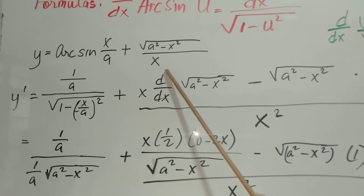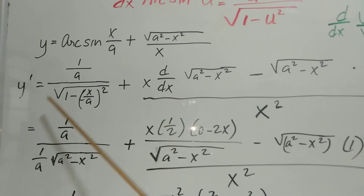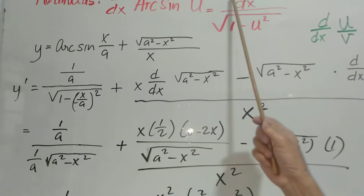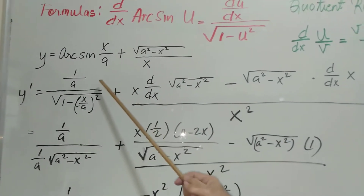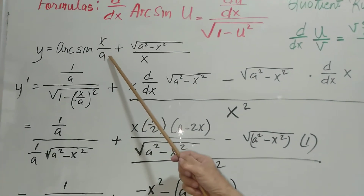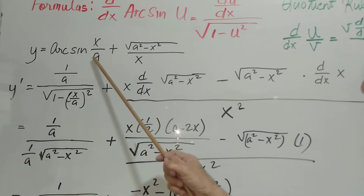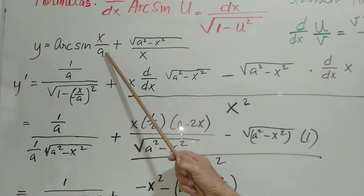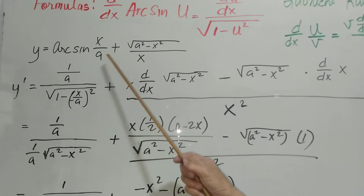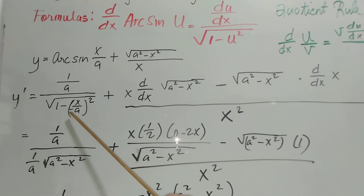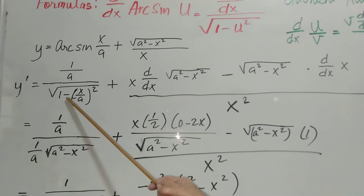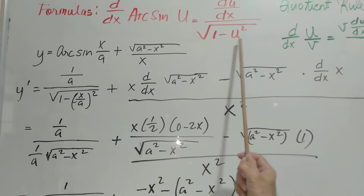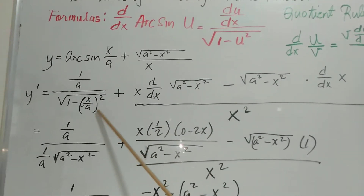So y prime, the derivative of y, is equal to du/dx. So 1 over a — this is a constant — so that will be 1 over the square root of 1 minus (x/a) squared, where u here is x/a. So this is the derivative of arcsin(x/a) plus the derivative of the quotient.